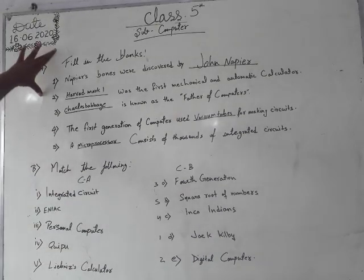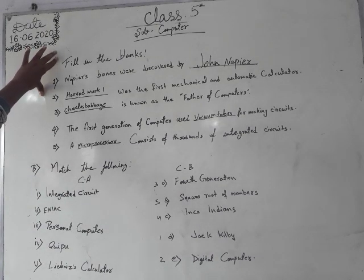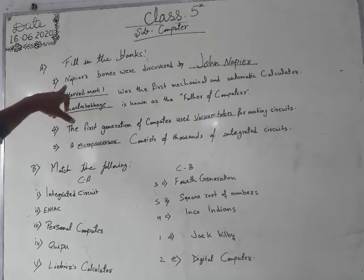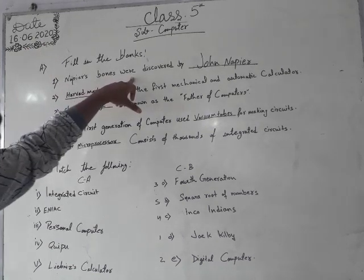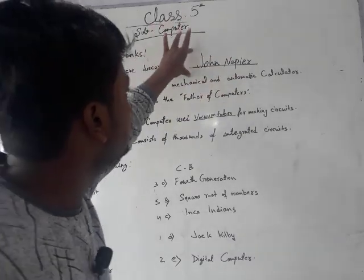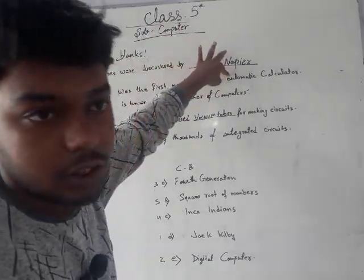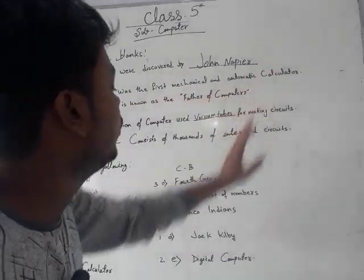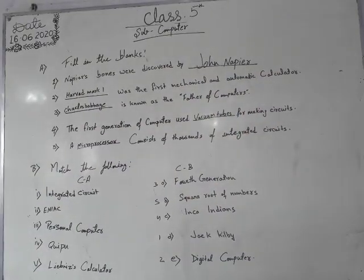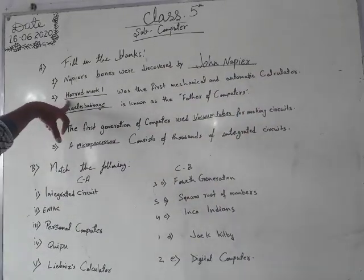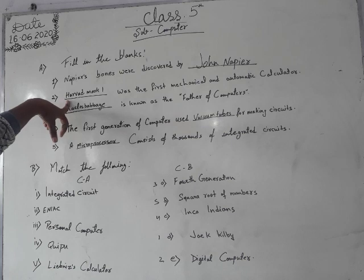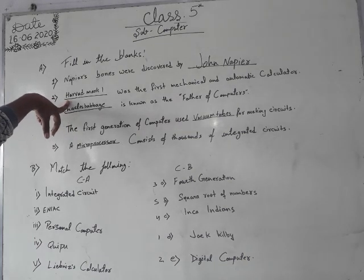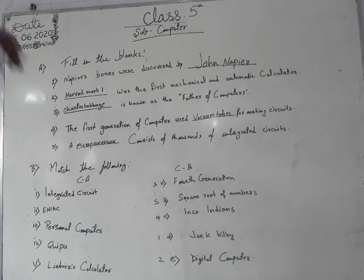Then next — fill in the blanks. Fill up your notes first. Number one: Napier's bones were discovered by dash — answer is John Napier. Number two: dash was the first mechanical and automatic calculator — you guys know how to read it — answer is Harvard Mark I.